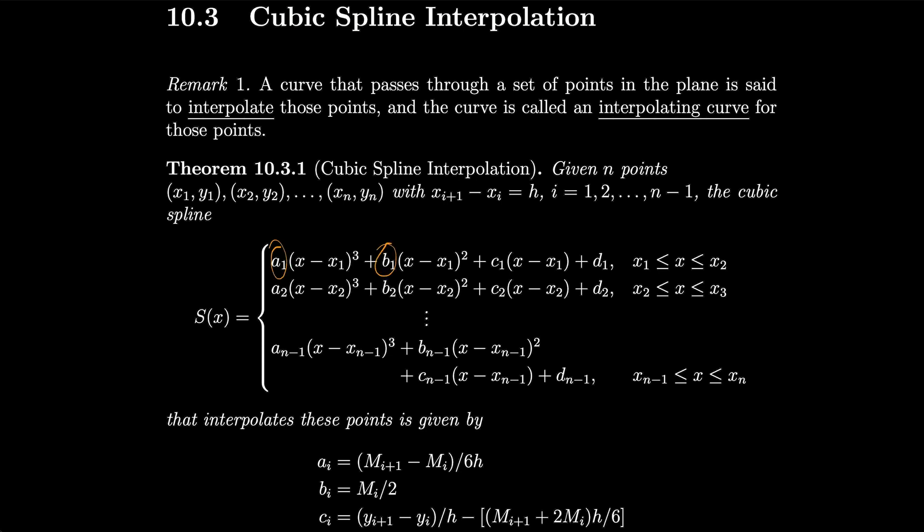Our cubic spline is given by some a1 times (x minus x1), some b1 times (x1 minus x2). The first one is cubed, then squared, and so on. And we do that for each of our intervals from x1 to x2, x2 to x3, and so on all the way through xn.